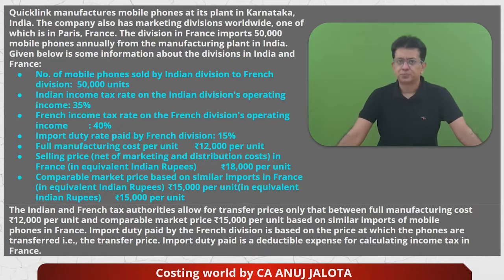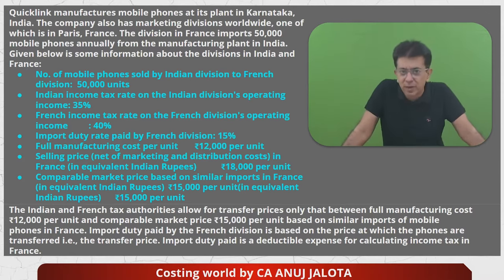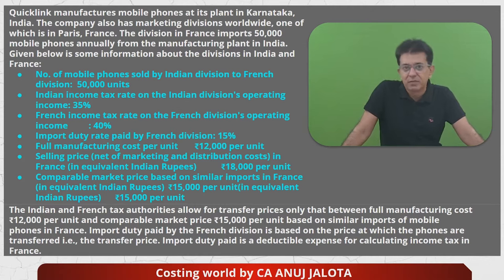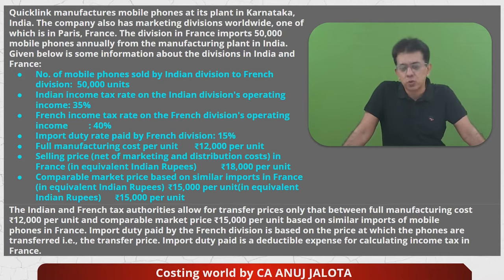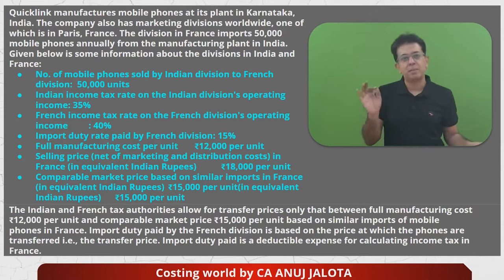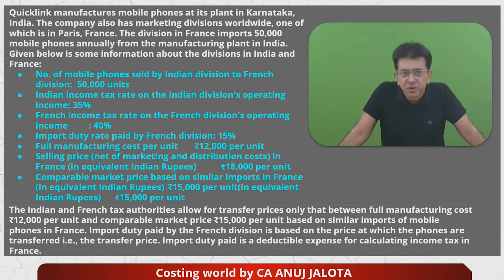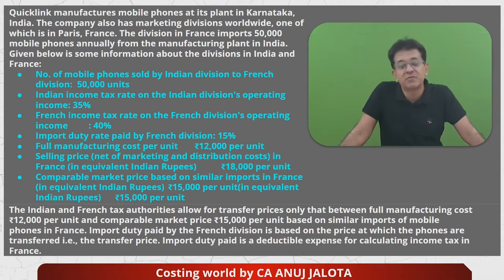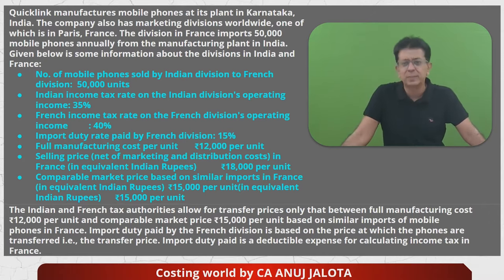So, Quick Link is the name of the company. It manufactures mobile phones at its plant in Karnataka, India. The company also has marketing divisions worldwide, one of them in Paris, France. The division in France imports 50,000 mobile phones annually from the manufacturing plant in India. The Indian division is a manufacturing division, whereas the France division is just a marketing division — it buys phones, may incur some S&D cost, and then sells them in France.